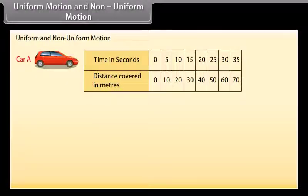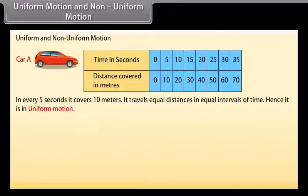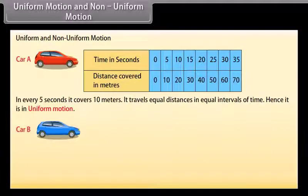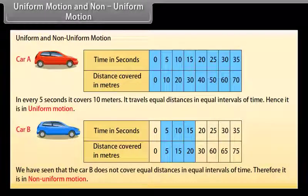Uniform and non-uniform motion. To understand uniform and non-uniform motion, let's take one example. Look at this table — this is the distance covered by car A. In 0 seconds it covers 0 meters, in 5 seconds it covers 10 meters, in 10 seconds it covers 20 meters, and so on. In every 5 seconds it travels equal distances in equal intervals of time, hence it is in uniform motion. Car B covers 5 meters in 5 seconds, 15 meters in 10 seconds, 20 meters in 15 seconds. Car B does not cover equal distances in equal intervals of time, therefore it is in non-uniform motion.